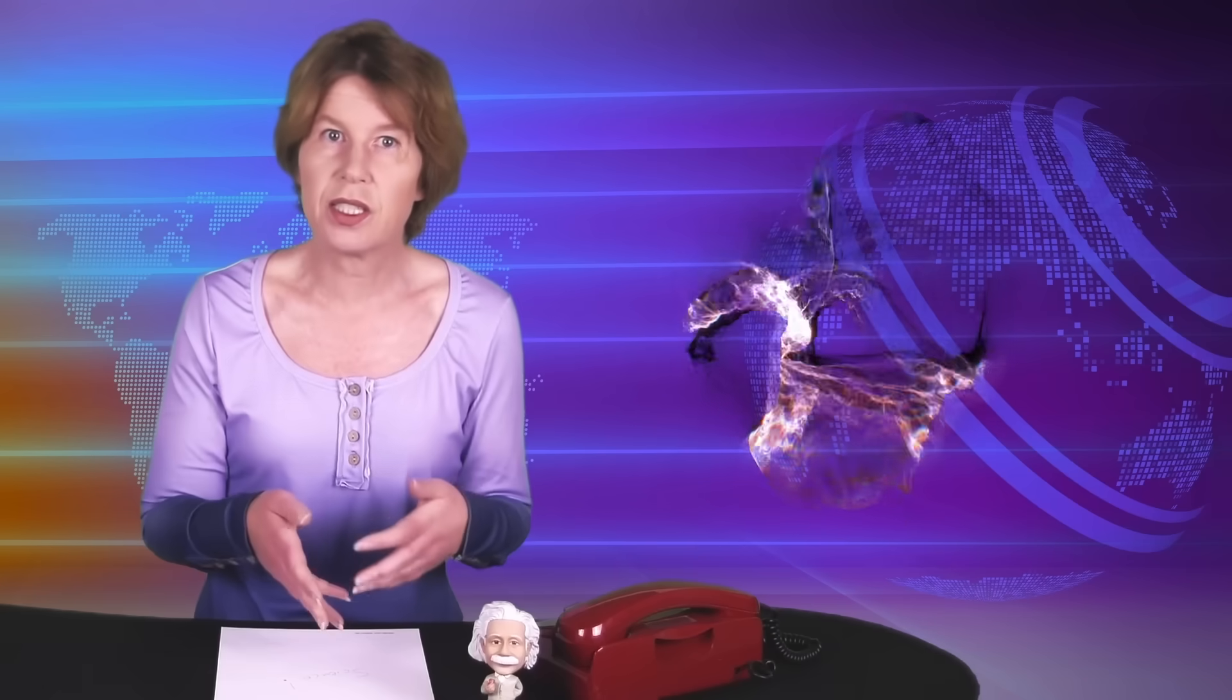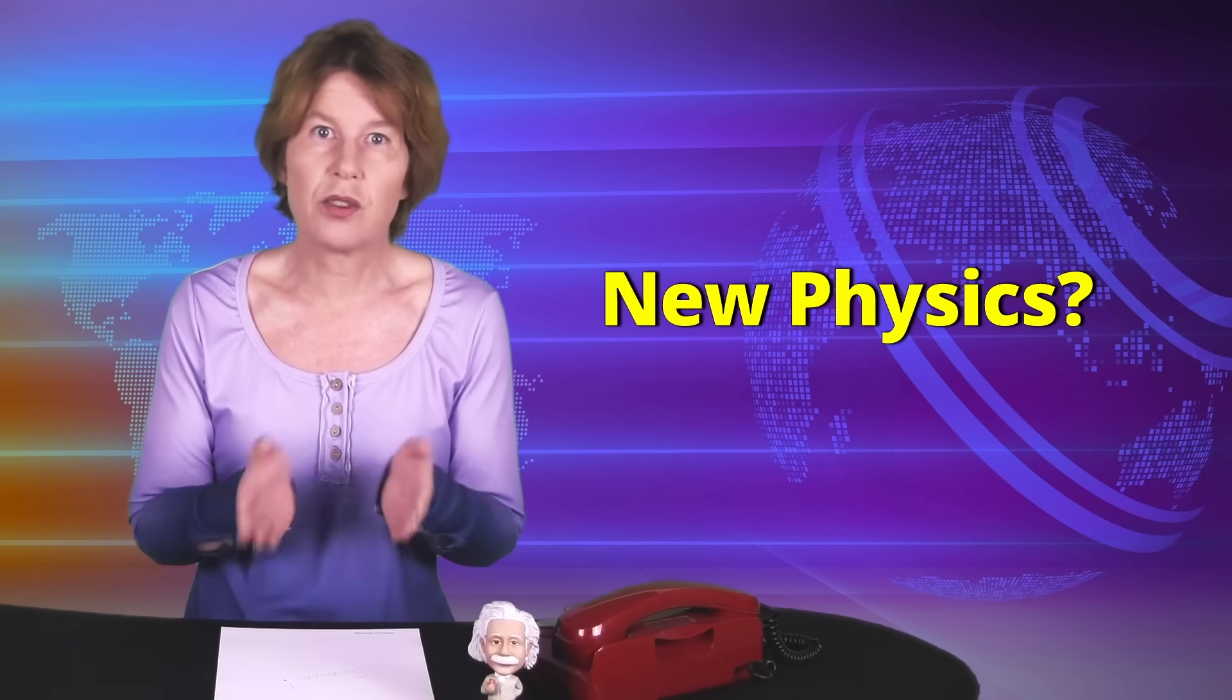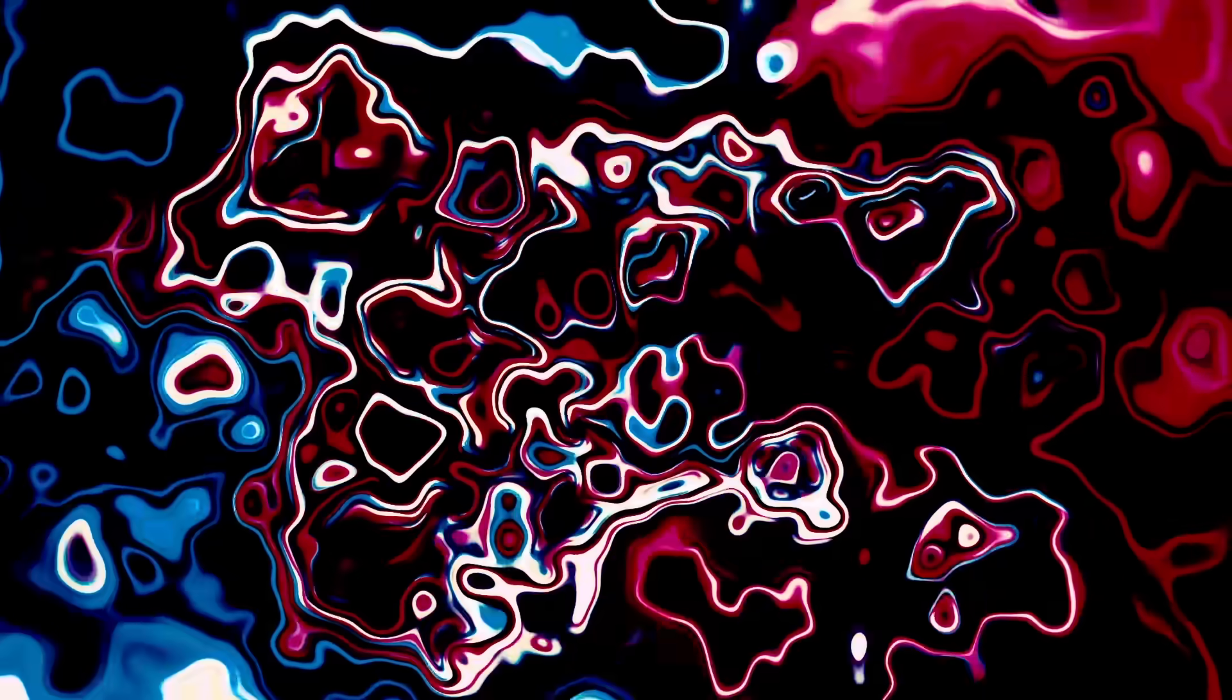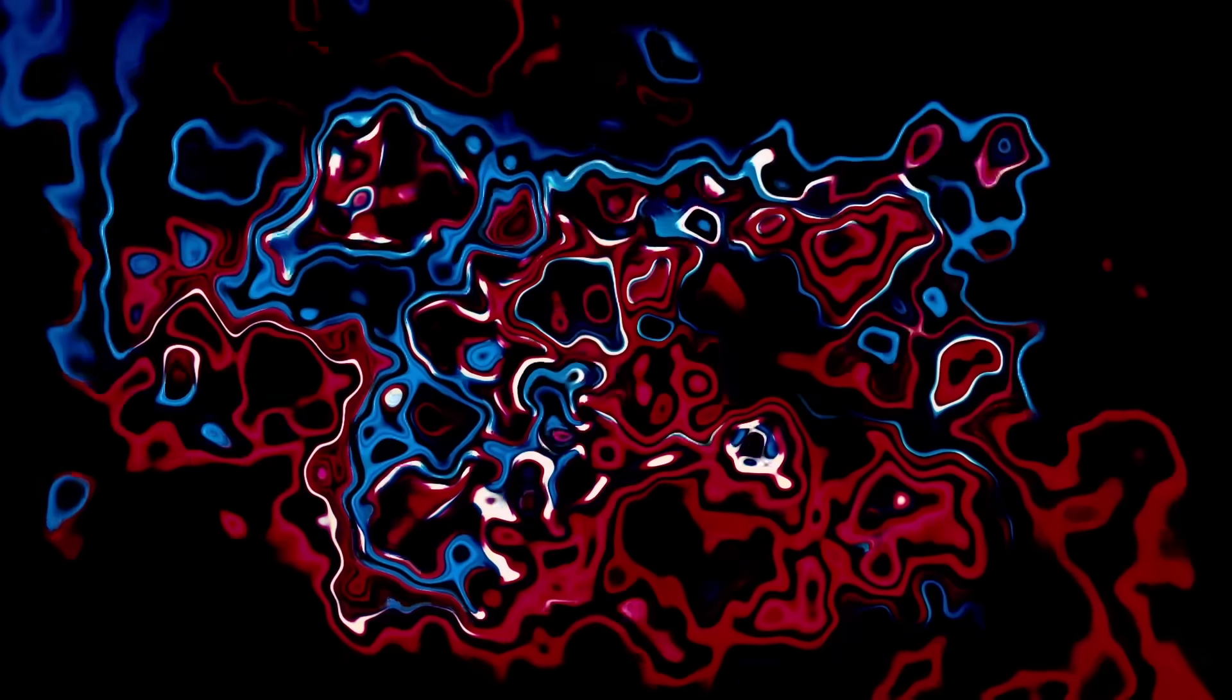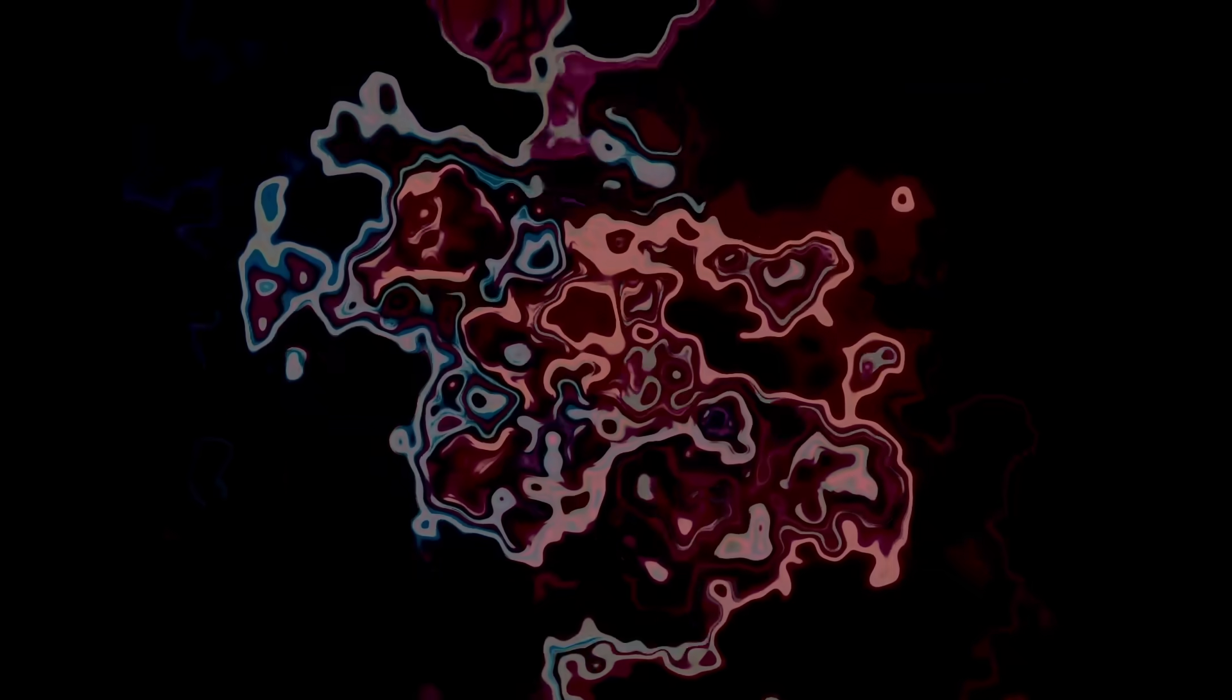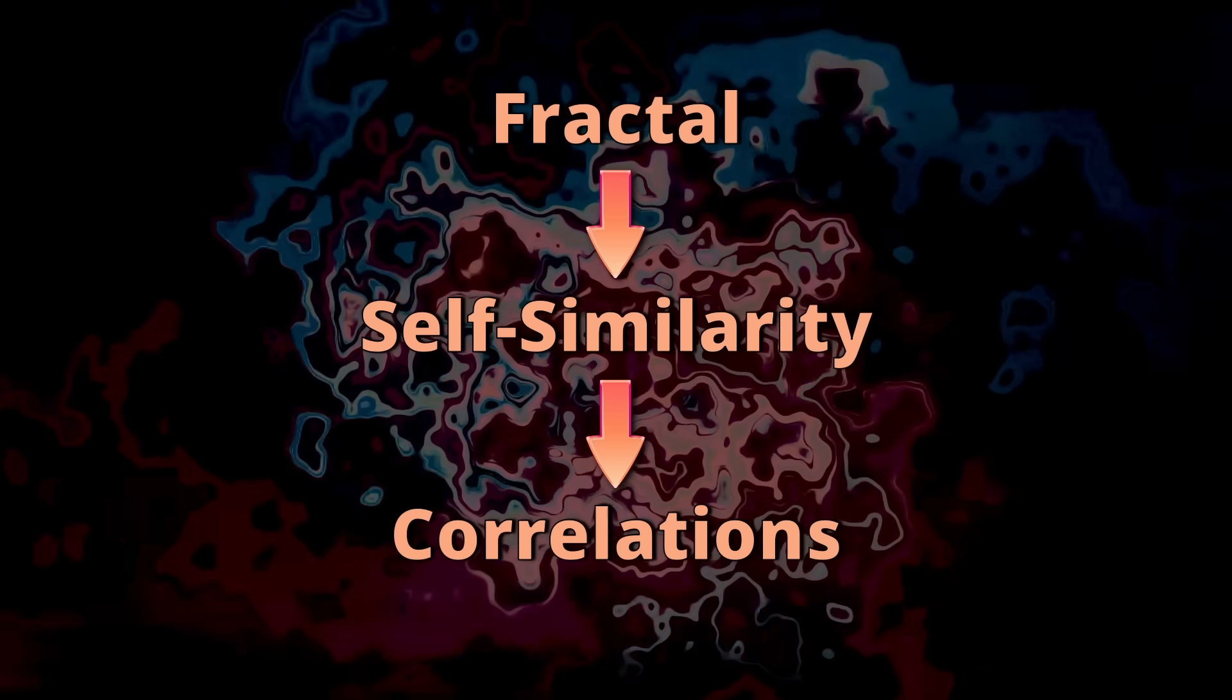Another possibility is that we misunderstood something about the plasma that formed in the early universe. Indeed, one of the theories which could give rise to such correlations is that of the fractal universe. The idea of the fractal universe is that the quantum fluctuations that gave rise to the motions of the plasma in the early universe had a self-similarity, a pattern that repeats from very large to very small scales.